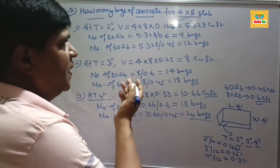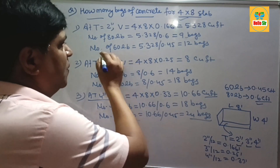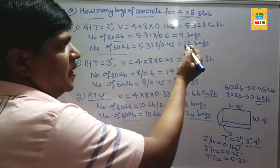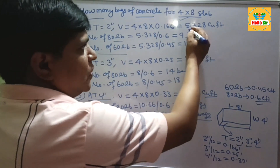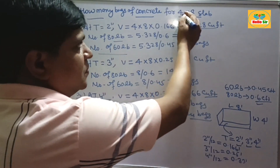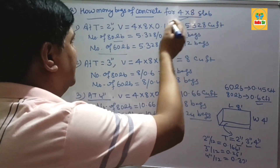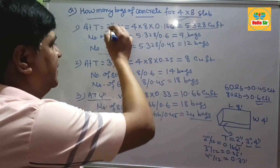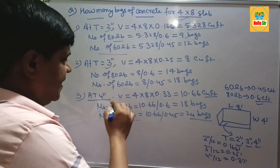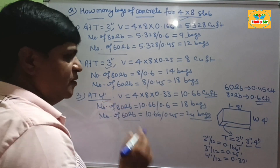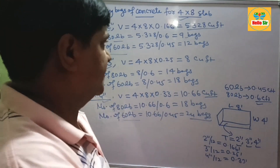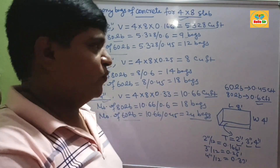You can solve easily using this process to find out the number of concrete bags and amount of cubic feet of concrete required for a 4x8 slab at 2 inch thickness, at 3 inch thickness, and at 4 inch thickness. Thank you.